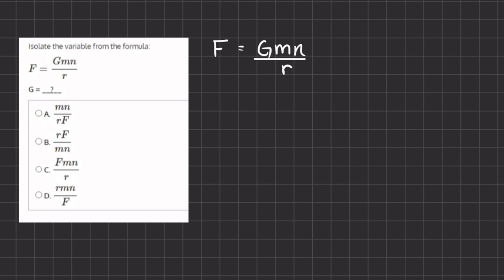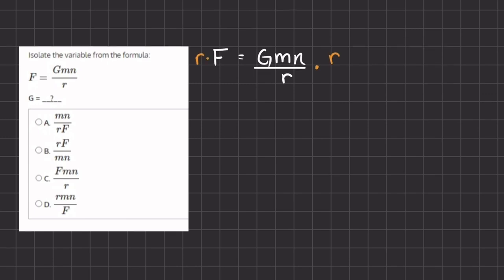The first thing we want to do in order to isolate g is to get rid of the denominator. We're going to multiply r on both sides. So now we have r times f, which gives us rf equals gmn, because these two cancel out.